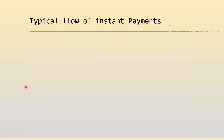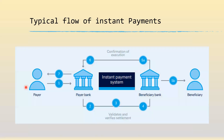Let's get into the details of a typical flow of an instant payment. The main actors are the payer, the payer's bank, the beneficiary, and the beneficiary's bank. When the payer initiates the transaction through a mobile or internet banking channel, it goes to the payer's bank, which validates the balance and debits the payer. It sends a message to the instant payment system or CSM, which forwards it to the beneficiary's bank. The beneficiary's bank validates that the beneficiary is present and valid, then credits the beneficiary and notifies the payer's bank. The payer's bank notifies the payer that the money has been debited and received by the beneficiary.